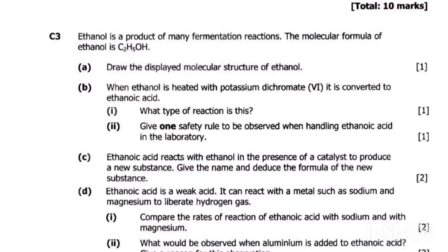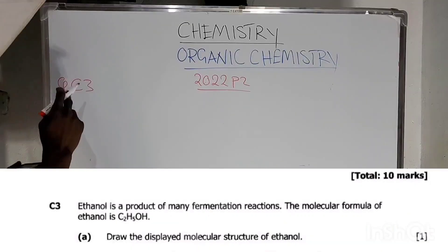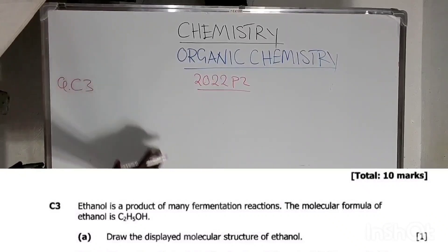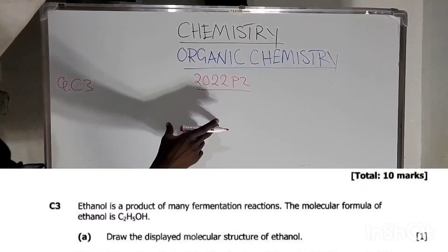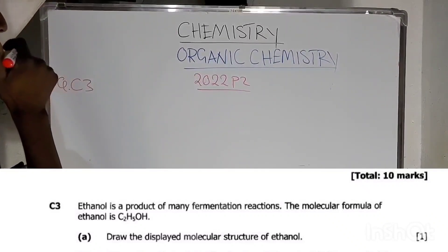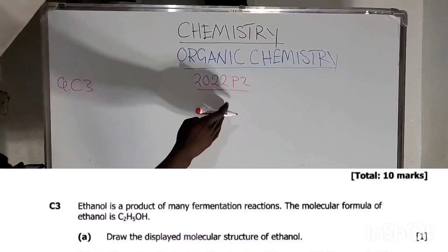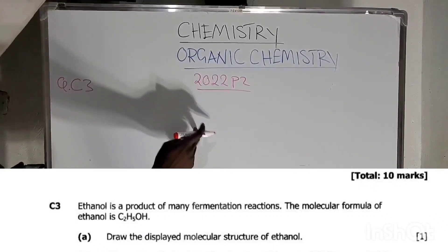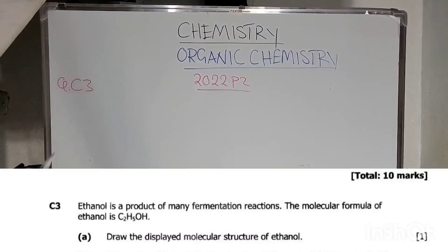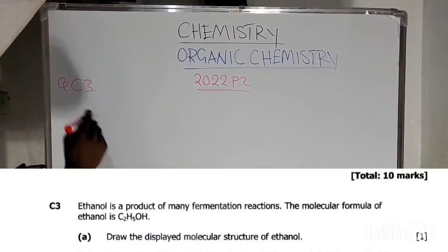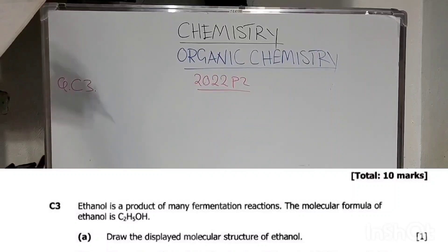In the previous video, we answered question B9 under organic chemistry about the processes involved when ethanol is oxidized. We covered dehydration, complete combustion, and the only process missing was fermentation.